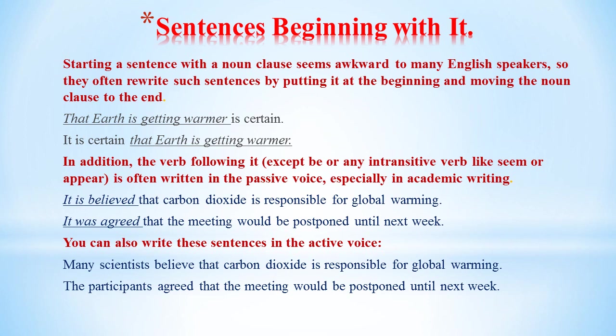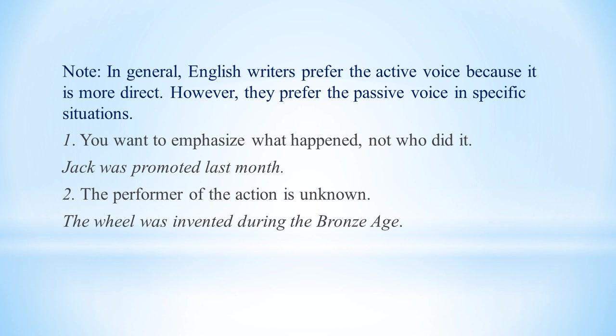You can also write these sentences in the active voice: 'Many scientists believe that carbon dioxide is responsible for global warming.' 'The participants agreed that the meeting would be postponed until next week.' In general, English writers prefer the active voice because it is more direct. However, they prefer the passive voice in specific situations: when you want to emphasize what happened, not who did it — for example, 'Jack was promoted last month' — or when the performer of the action is unknown, for example, 'The wheel was invented during the Bronze Age.'